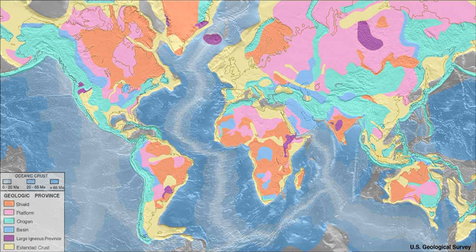An orogeny is an event that leads to both structural deformation and compositional differentiation of the Earth's lithosphere at convergent plate margins. An orogen or orogenic belt develops when a continental plate crumples and is pushed upwards to form one or more mountain ranges. This involves a series of geological processes collectively called orogenesis. Orogeny is the primary mechanism by which mountains are built on continents.